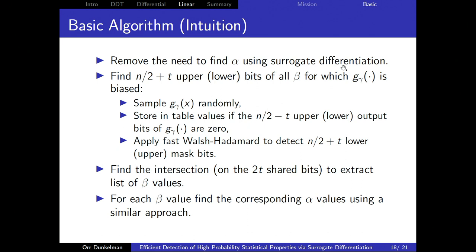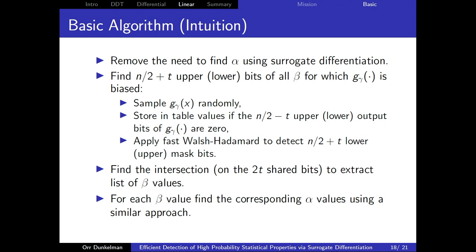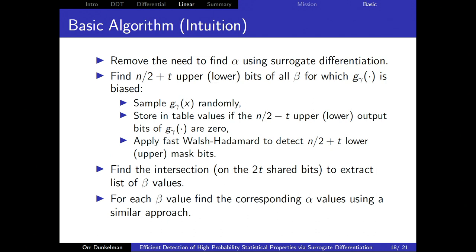You get zero → beta, so looking at g_gamma you get an output mask which is biased. The algorithm finds the upper n/2 + t bits of beta and the lower n/2 + t bits of beta separately by looking at partial functions with bias. We store everything in a table, find the intersection over the 2t overlapping bits, and get a list of possible beta values. For each beta we find the corresponding alpha by running the algorithm on the other side.